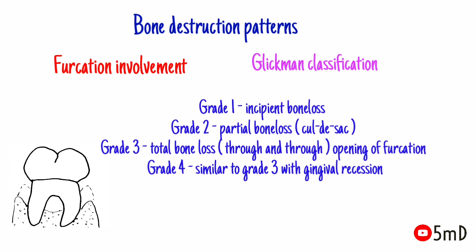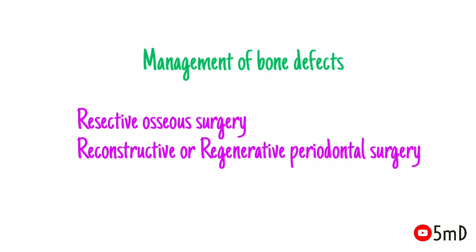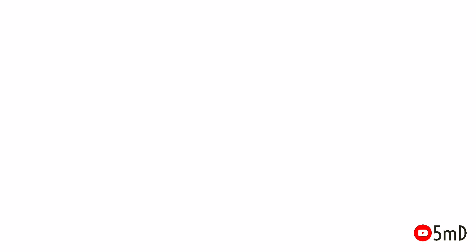Finally, how to treat a bone defect? It is again a wide topic, but basically any major osseous defect can be treated mostly by resective osseous surgery, or reconstructive and regenerative periodontal surgery. If you find this information useful, kindly help your fellow dental students by sharing this video. See you soon in the next video.